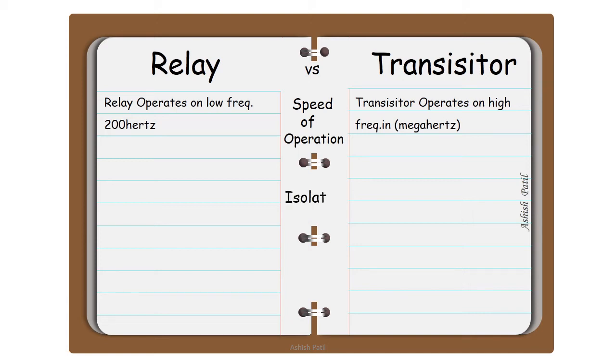Isolation. Relay is highly isolated from control coil. Transistor is not isolated from base, gate or trigger.